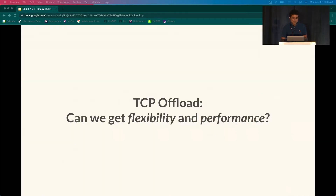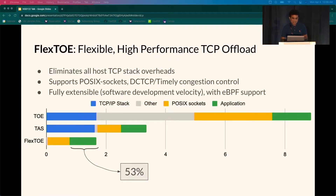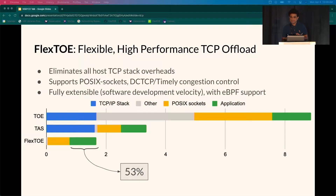The question we ask is: can we get high velocity development for TCP offload and scalable performance to achieve line rate? We solve this with Flexto — a high-performance yet flexible TCP offload to CPU-based SmartNICs that is highly extensible. Flexto eliminates all host TCP stack overheads, leaving more than half of the per-request CPU cycles for the application.